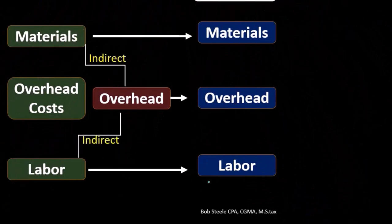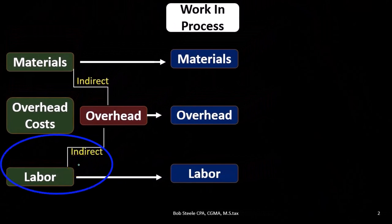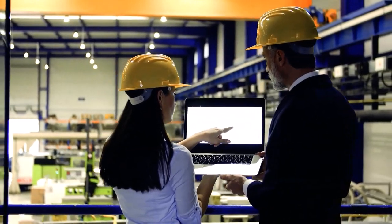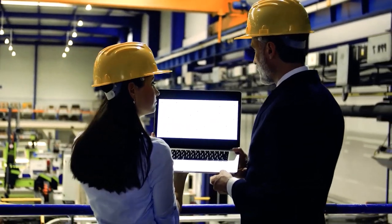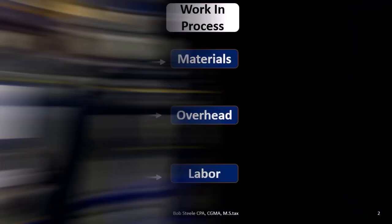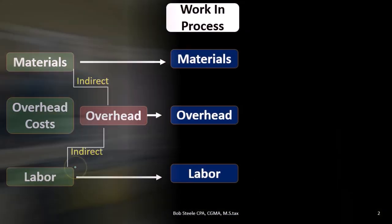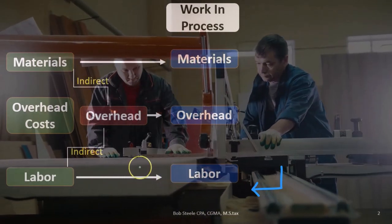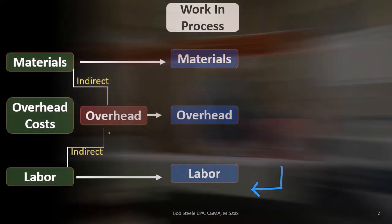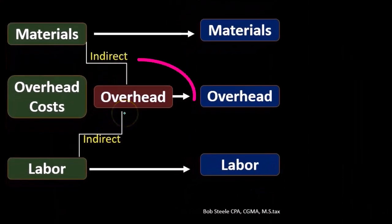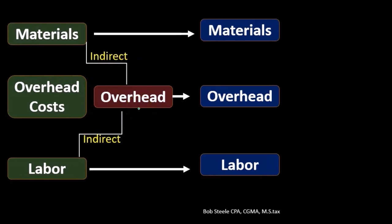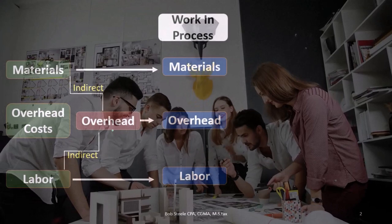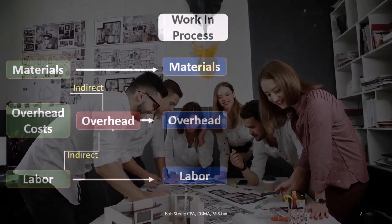However, we may have some people working in the warehouse that we cannot assign to a particular job — things like the supervisor salary or maintenance — because we don't know which job it goes to. Some labor will be direct labor, assigned directly to the job, and some will be indirect. If we can't assign it directly to the job, it will be included in overhead. Overhead is basically a big bucket of costs that we cannot, or it would not be cost-effective to, assign directly to a particular job.